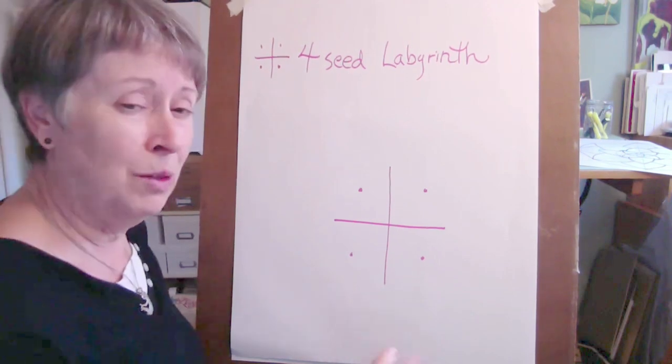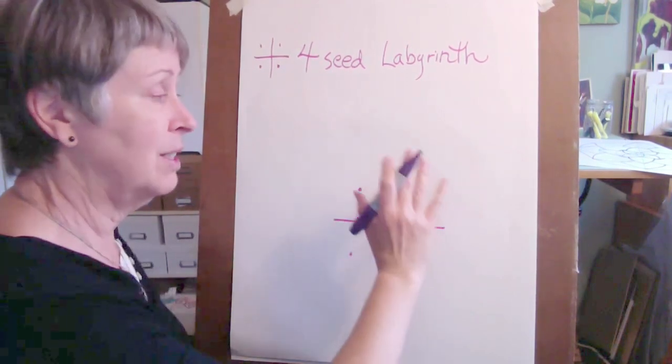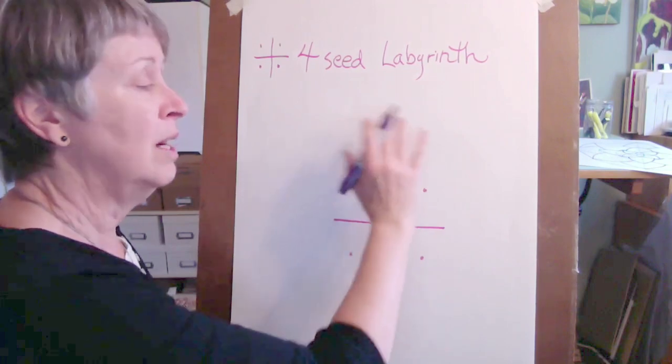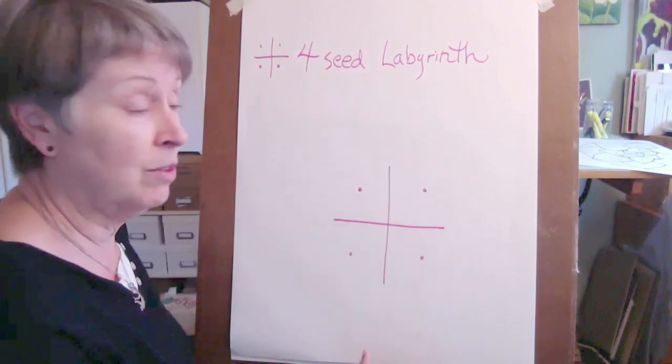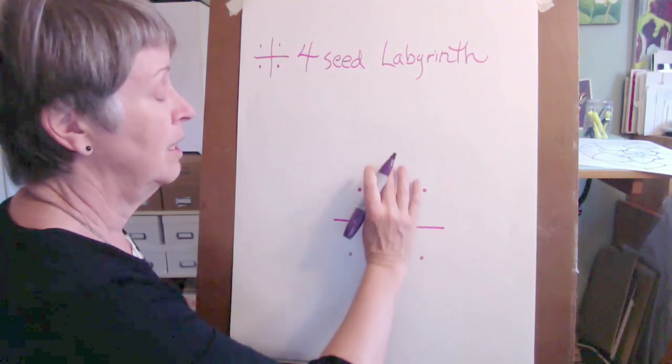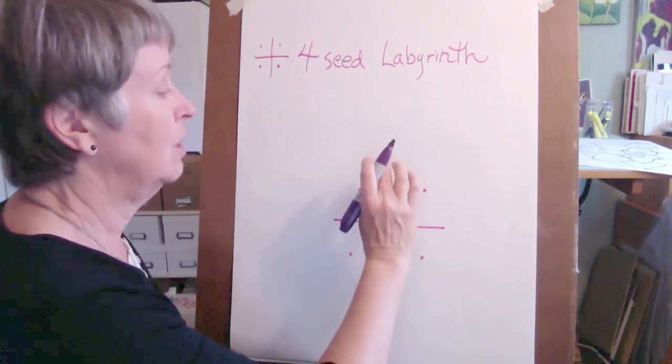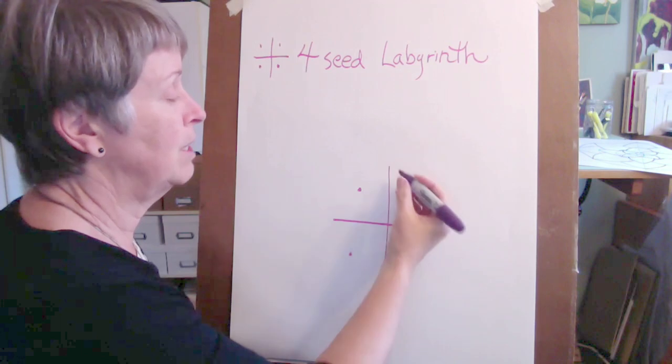And then the trick is to go from one side to the other. It doesn't matter which way you go, but you need to be consistent going from one side to the other. So I'm going to start in the center, so I'm going to move to the right with each of my lines.